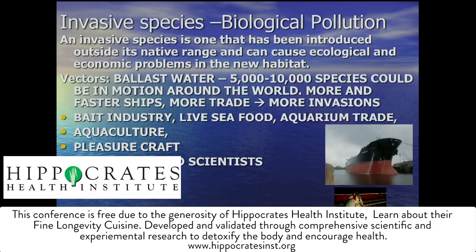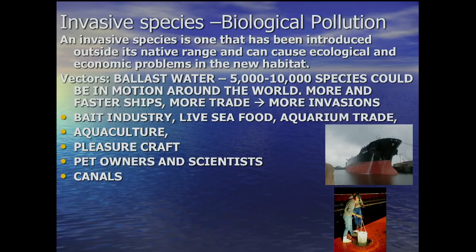Other sources beyond ballast water include the bait industry, live seafood, aquarium trade, aquaculture, pleasure boats. Pet owners can sometimes decide they got tired of their exotic fish and dump it in a nearby body of water. Sometimes scientists have done bad things. And canals can be a way for things to move - the Suez Canal, for example, was a really good way for things to move into the Mediterranean.